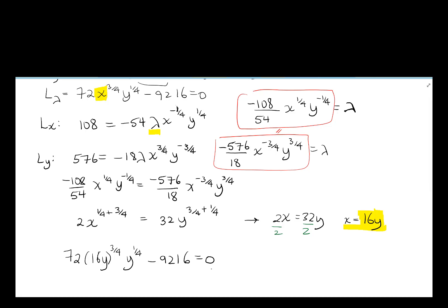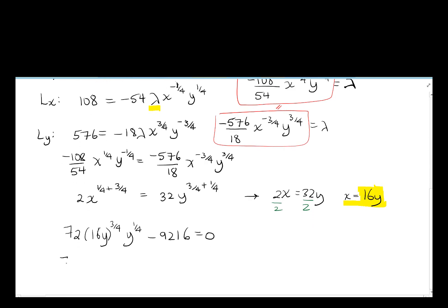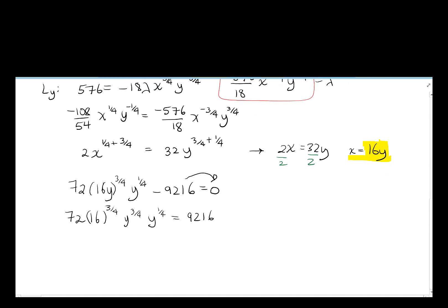Now we clean this up a little bit. Be so careful, the 72 just stays as it is now. 16 is actually being put to the power of 3/4. Y to the power of 3/4, it's being times by y to the 1/4. We're going to bump the 9216 to the other side. And 16 to the power of 0.75 gives us 8. That's times by y^(3/4) times y^(1/4) gives us y^1. That's equal to 9216, and then divide both sides by 72 and 8.